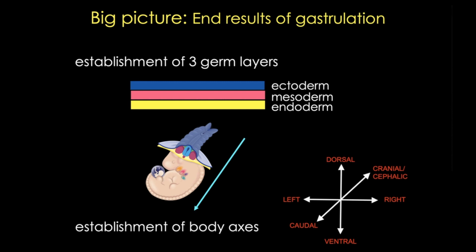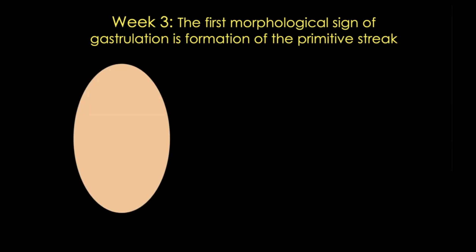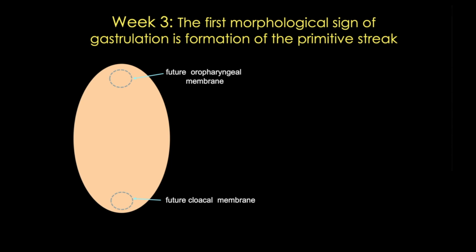Gastrulation begins with the formation of the primitive streak on the epiblast surface. The cranial or cephalic end of the embryo is the site of the future oropharyngeal membrane and future mouth; the future cloacal membrane marks the caudal end. These two areas consist of tightly adhering ectoderm and endoderm and will never have mesoderm in the middle. The primitive streak starts at the caudal end and lengthens via proliferation of epiblast cells, visible as a narrow groove that bulges on either side. The cranial end of the streak is called the primitive node, a slightly elevated area surrounding a depression called the primitive pit.